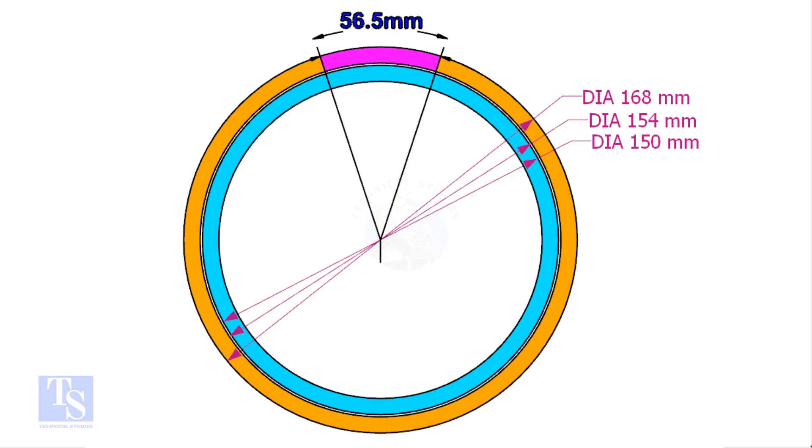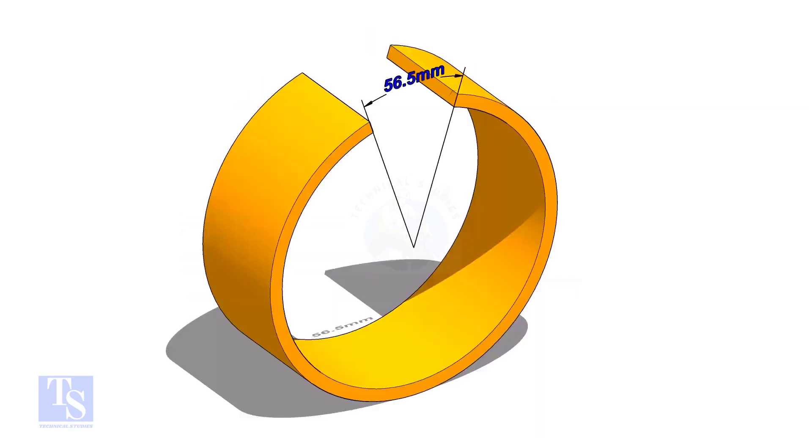Let me show you how to make a 150mm OD pipe from a 168mm OD pipe. Subtract 150 from 168 and multiply by 3.14. The answer is 56.5. Cut the pipe as shown.